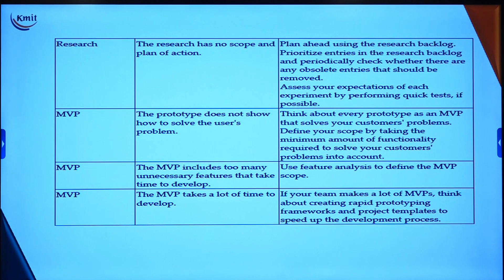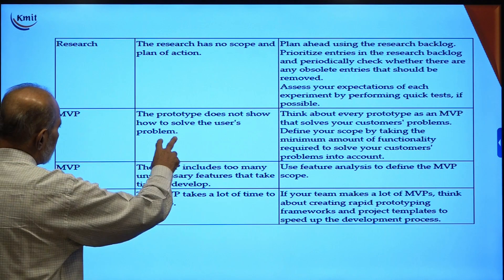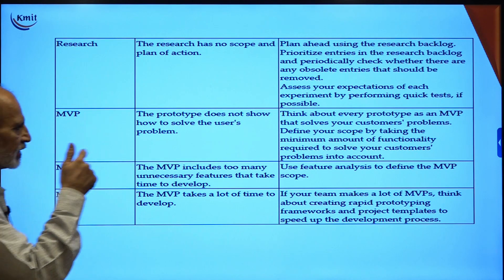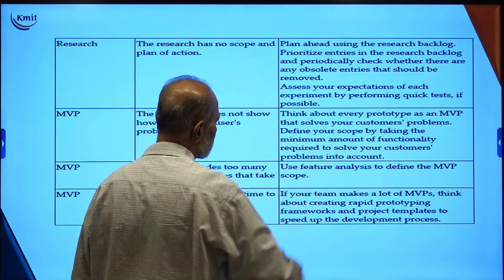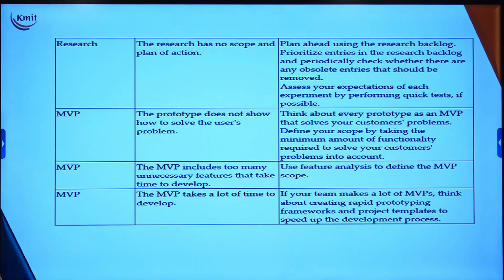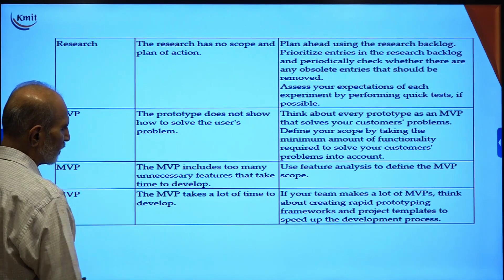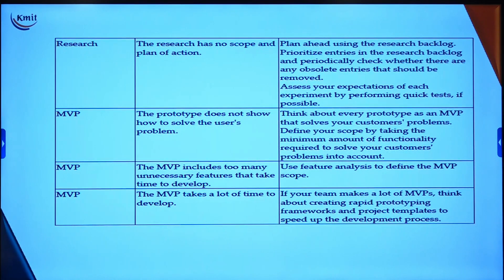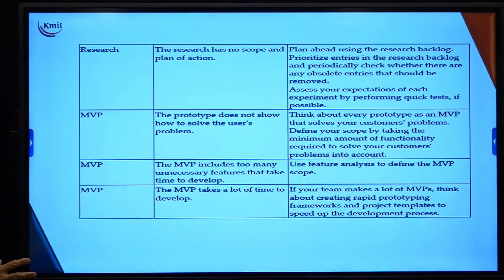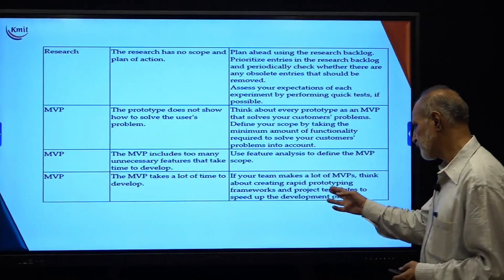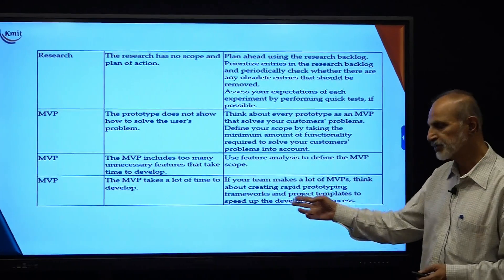The third category is MVP. If the prototype does not show how to solve a user problem, think about every prototype as an MVP that solves your customer's problem, and define your scope by taking the minimum functionality required to solve the customer's problem. If the MVP includes too many unnecessary features, use feature analysis to define the MVP scope. If the MVP takes too long to develop, think about creating a rapid prototype framework and project template to speed up the development process.